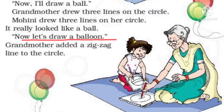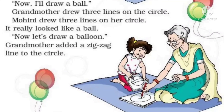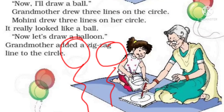Now let's draw a balloon. Grandmother added a zigzag line to the circle. Ab Grandmother ne kya kiya? Unhone kaha chalo ab hum balloon banate hain. Balloon matlab gubare. Aur usme unhone balloon bana ke usme zigzag jo line thi usko draw kiya. Okay?